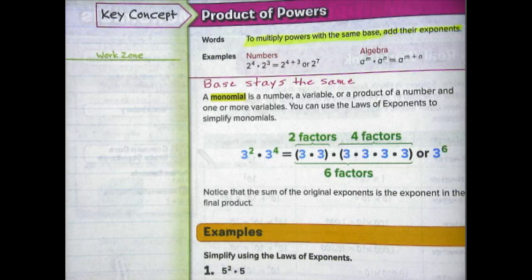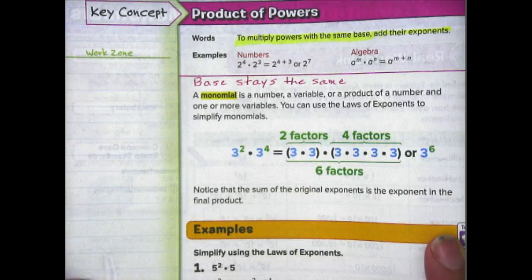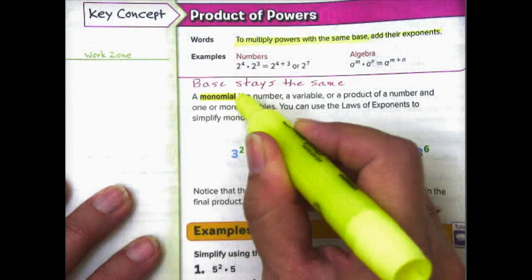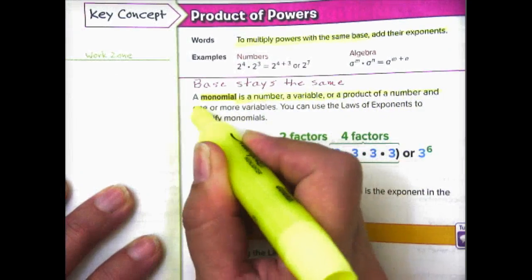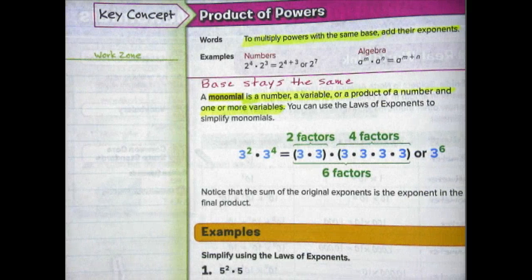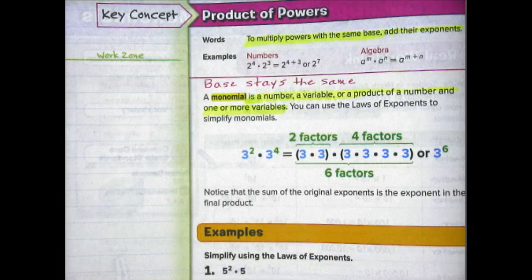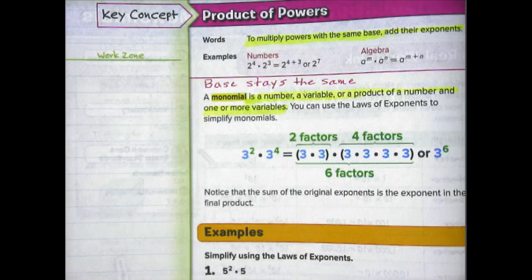Here's our vocabulary word. A monomial is a number, a variable, or a product of a number and one or more variables. You can use the laws of exponents to simplify monomials. It sounds harder than it is — a monomial could be a number like 5, 15, negative 2, or negative 3. It could be a variable like x, n, or t. Or it could be the product of a number and one or more variables, such as 3 times x, 4 times y, or 3 times x times y.